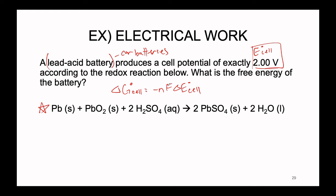The cell potential is exactly 2 volts, so E°(cell) is already determined — we just plug in 2 volts. Our F is Faraday's constant, 9.65 × 10⁴ coulombs per mole of electrons. The only value we don't have explicitly is N, but we have the balanced chemical equation, which we can use to find N by observing the oxidation numbers of every species to figure out what's being oxidized, what's being reduced, and how many electrons are being transferred.